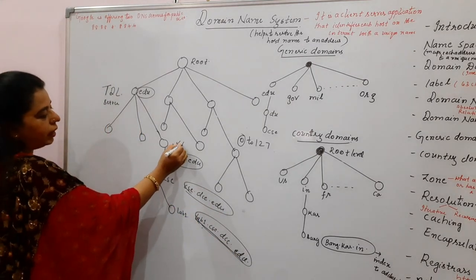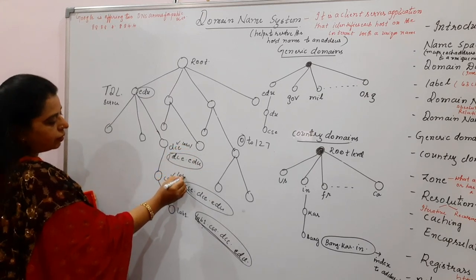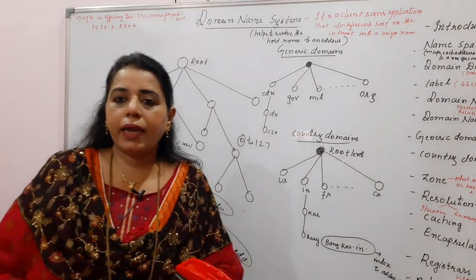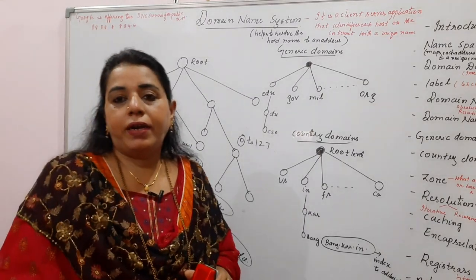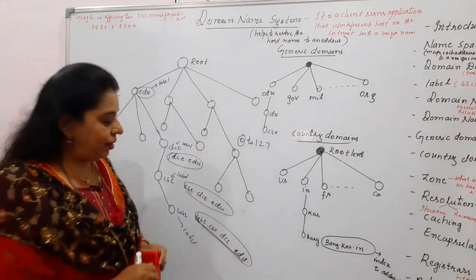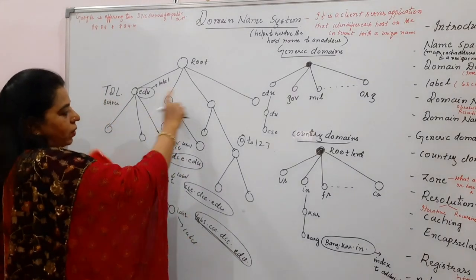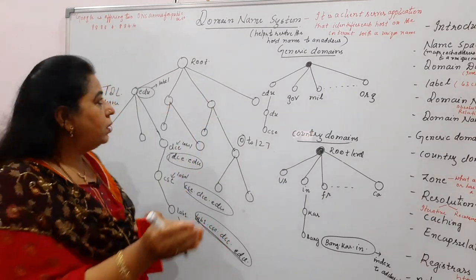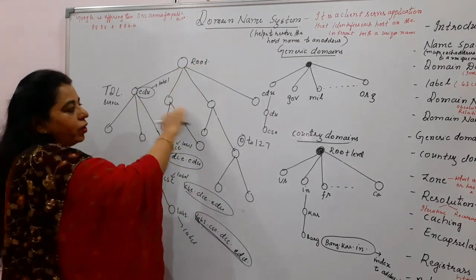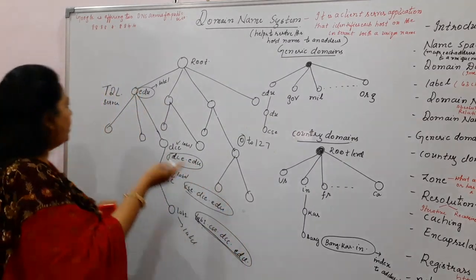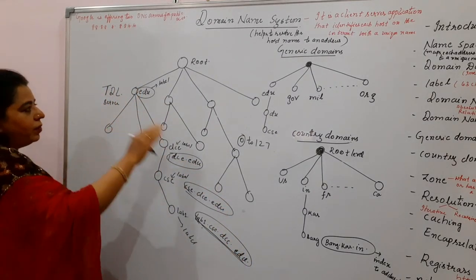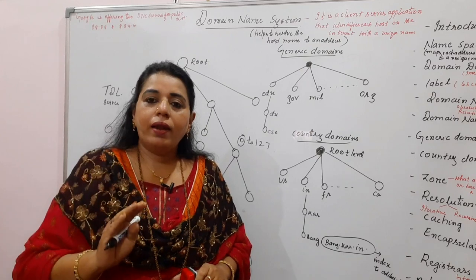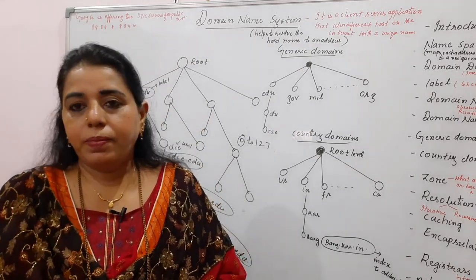DCE is what we call a label, and similarly each individual node name is a label. A label can be up to 63 characters, whereas the hierarchy can go from level 0 to 127 — meaning 128 levels are possible. So this is called the domain name space, represented as an inverted tree, with the root server at the top followed by the top level domain servers, continuing up to 127 levels.